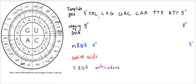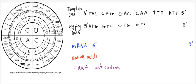In this video we'll just practice some transcription and translation. We'll start out with this template strand of DNA. From this template strand you should be able to figure out the opposite strand, the lagging strand. What I have to do is find the complementary base. So T will go with A, A will go with T, C with G, and we just keep on doing this all the way down. This should be pretty easy — it's really just an exercise in making sure you know the complementary bases.